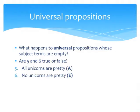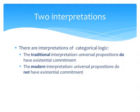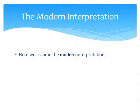And what about universal propositions? What happens to universal propositions whose subject terms are empty? Take sentences five and six: 'All unicorns are pretty' — which is of form A — and 'No unicorns are pretty.' Are they true or false? Well, that is going to depend on which interpretation of categorical logic you pick. There is the traditional interpretation and the modern interpretation. According to the traditional interpretation, universal propositions do have existential commitment. According to the modern interpretation, universal propositions do not have existential commitment. Here we follow the authors of your textbook, Understanding Arguments, in assuming the modern interpretation.